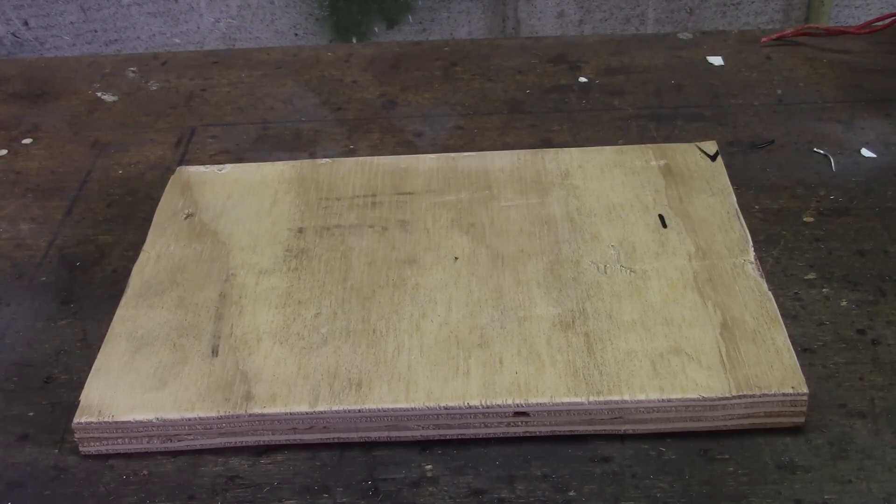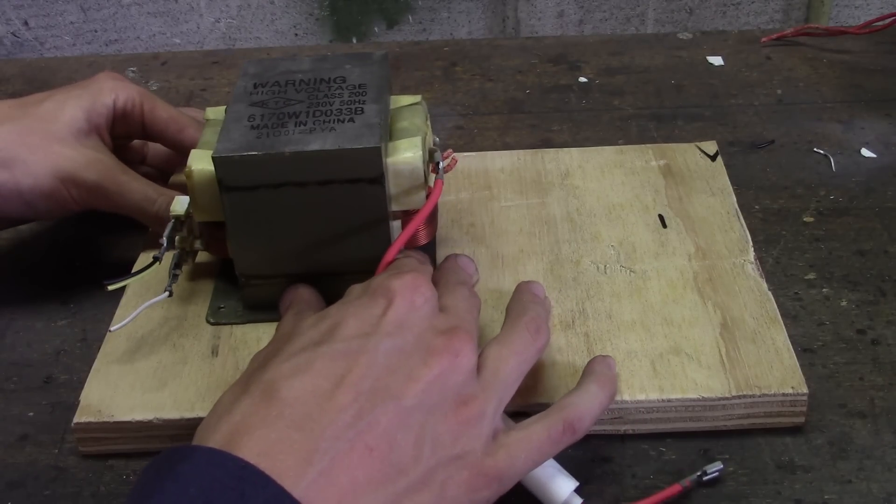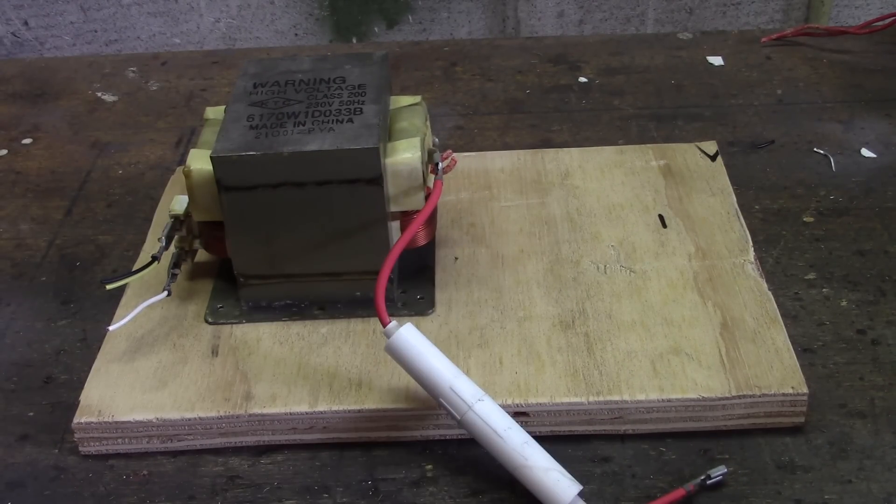Then we can take the piece of wood and put the transformer right on top of it. As you can see the piece of wood is a little bit too big so let's just make it a little smaller.